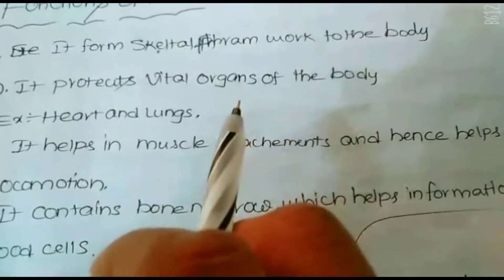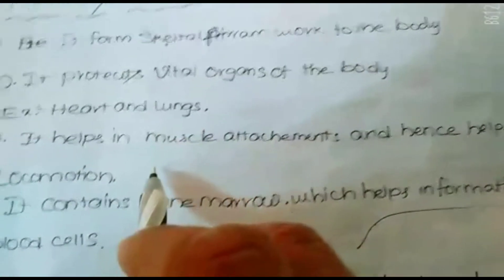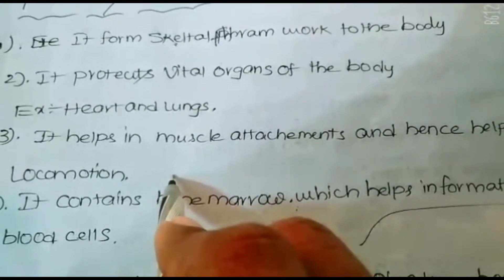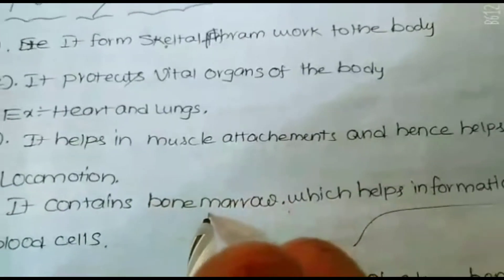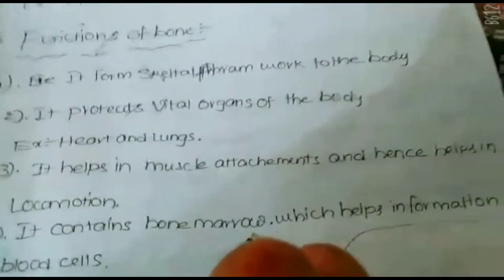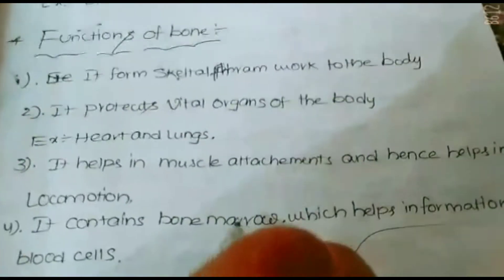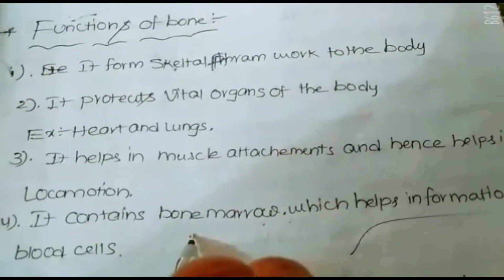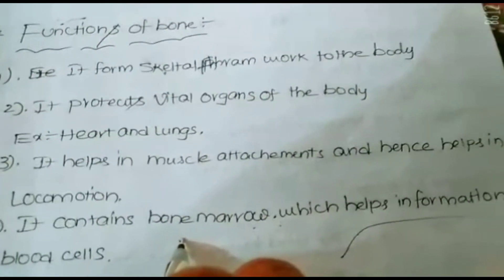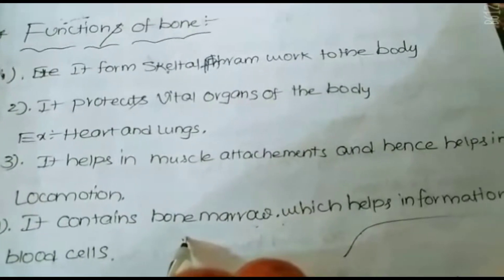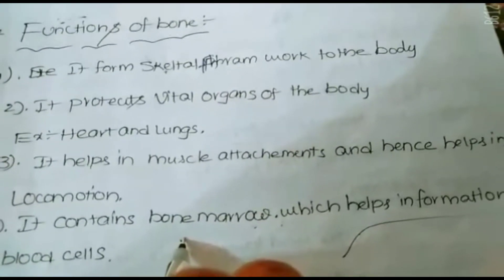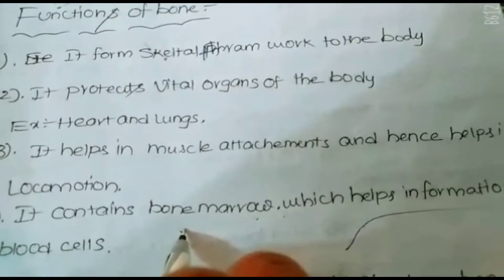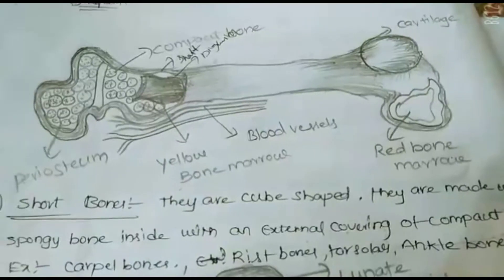Bone also helps in locomotion, for the movement of the body. It contains bone marrow, which helps in the formation of red blood cells — this is a main function in our body. Bone marrow is present in our bones only, and without red blood cells we cannot survive; we can get many immunological problems.